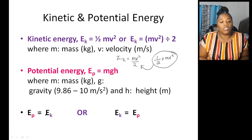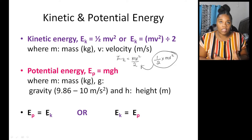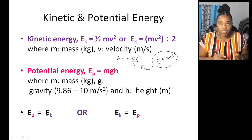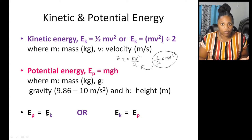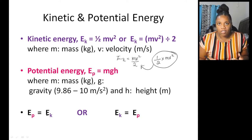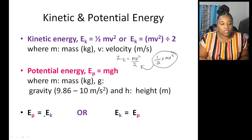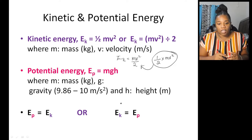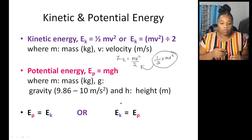At some point, potential energy equals kinetic energy, because the energy you stored is the energy you're going to use. If you're standing still, you have potential energy; when you run, you're converting it to kinetic energy. So EP = EK, and that relationship applies just before and during the action.